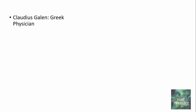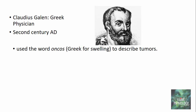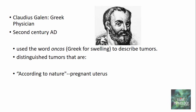Claudius Galen is another great Greek physician who, back in the second century AD, used the word oncos for the first time. Oncos was used to describe swelling — the tumor he referred to as oncos. He basically distinguished tumors into three categories: one, according to nature — he even thought the pregnant uterus is a tumor.